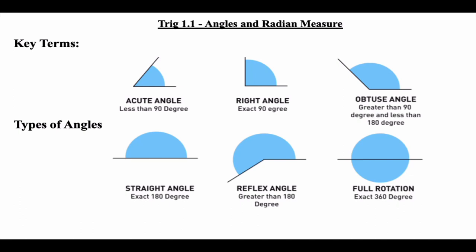So there are six types of angles. An acute angle is bigger than zero and less than 90 degrees. A right angle is exactly 90 degrees. Obtuse is bigger than 90 but less than 180. A 180-degree angle is a straight angle — half of a circle. A reflex angle is bigger than 180. And a full rotation is a full circle, 360 degrees. That's why there are 360 degrees in a circle — because it's a full rotation.